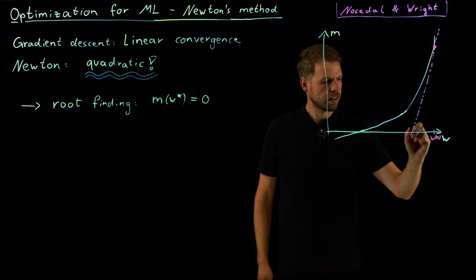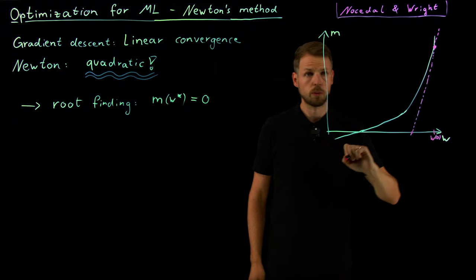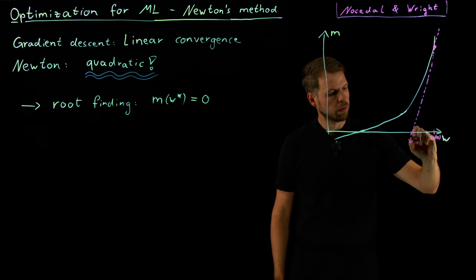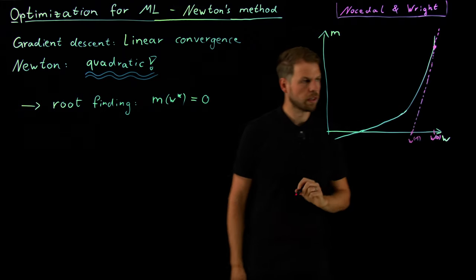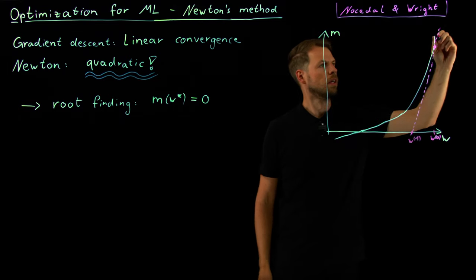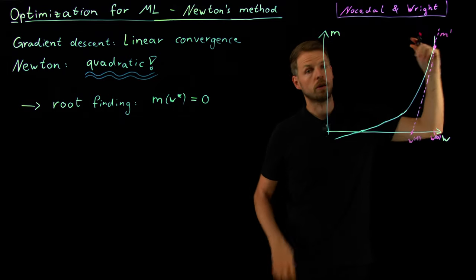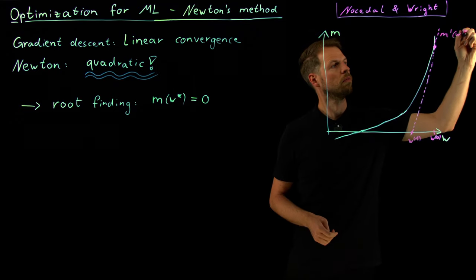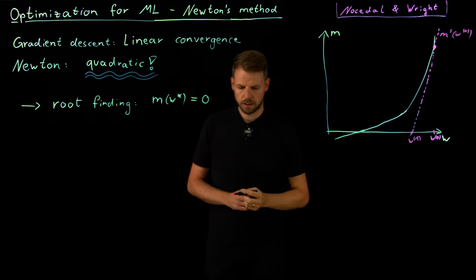And let's say this is the update that we are going to take for our W. So this is going to be W one. So we use the tangent information, which is derivative in 1D, or the gradient in higher dimensions of W zero. And using this tangent, we can find the zero vector.